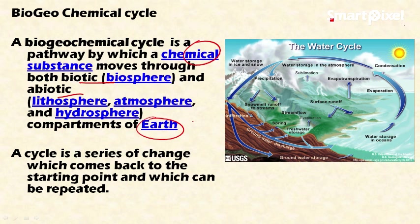Biotic components include living components, and abiotic components include non-living components of the ecosystem — that is, the lithosphere, atmosphere, and hydrosphere. A cycle is a series of changes which comes back to the starting point and can be repeated.